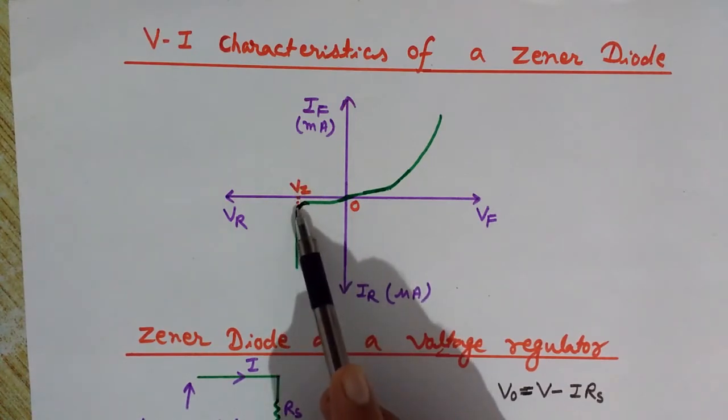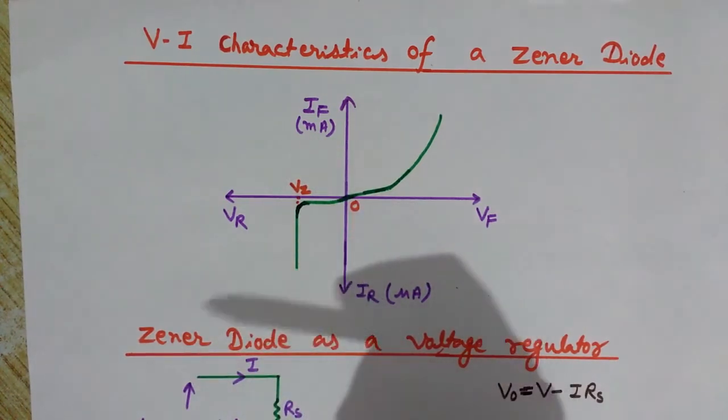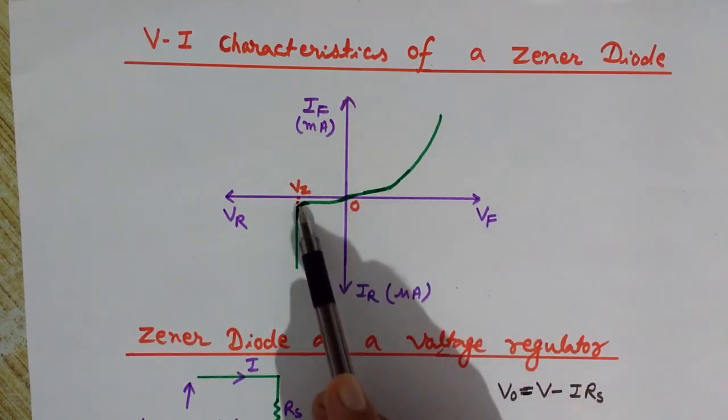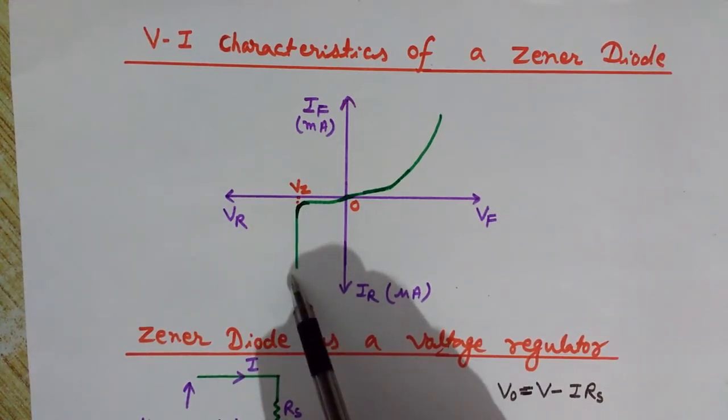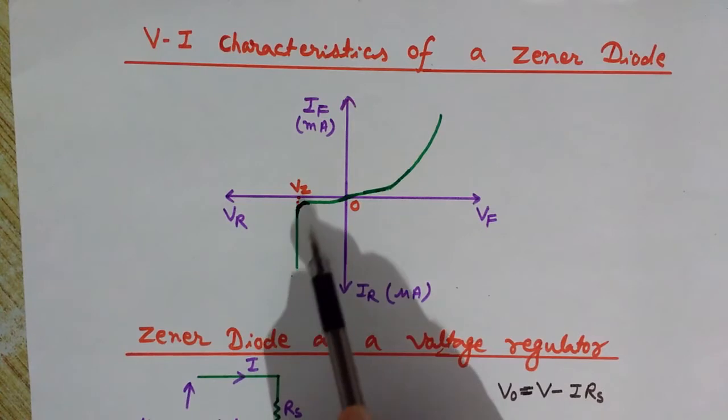When we keep on increasing the voltage, the diode suddenly breaks down and the current suddenly starts to increase. You can see here that if we want to further increase the reverse voltage, the voltage is not increasing - the current is flowing.